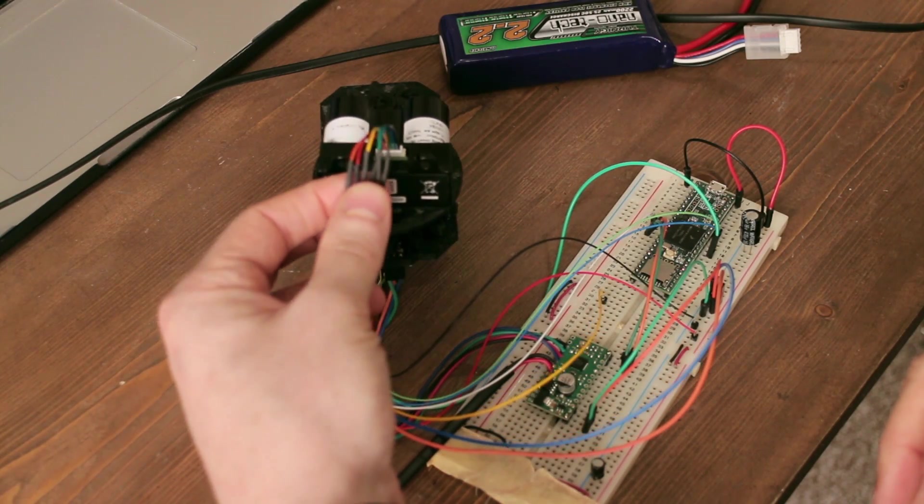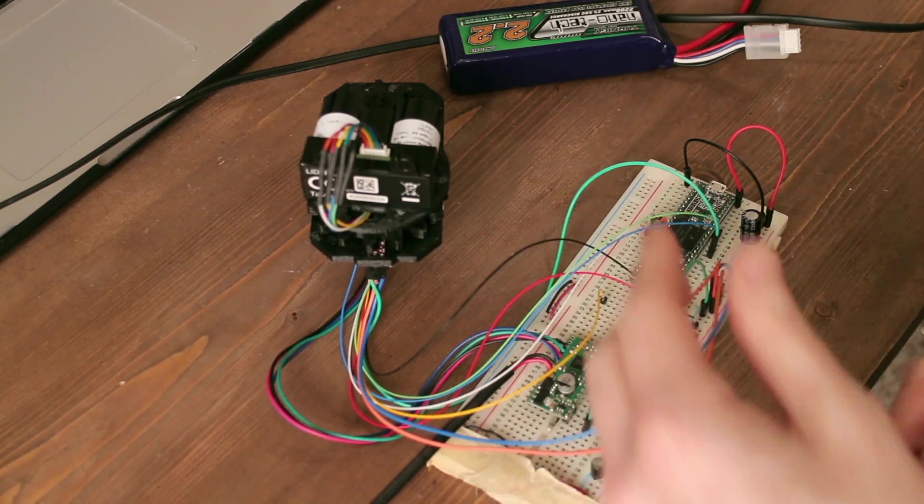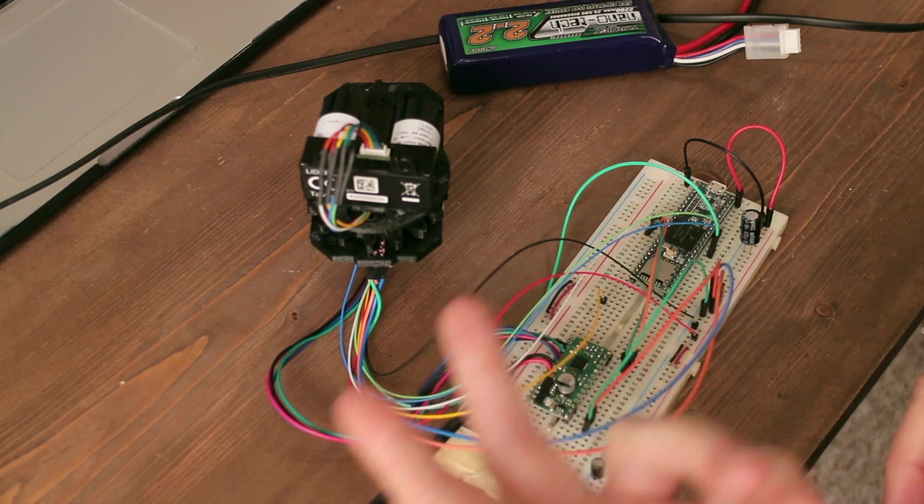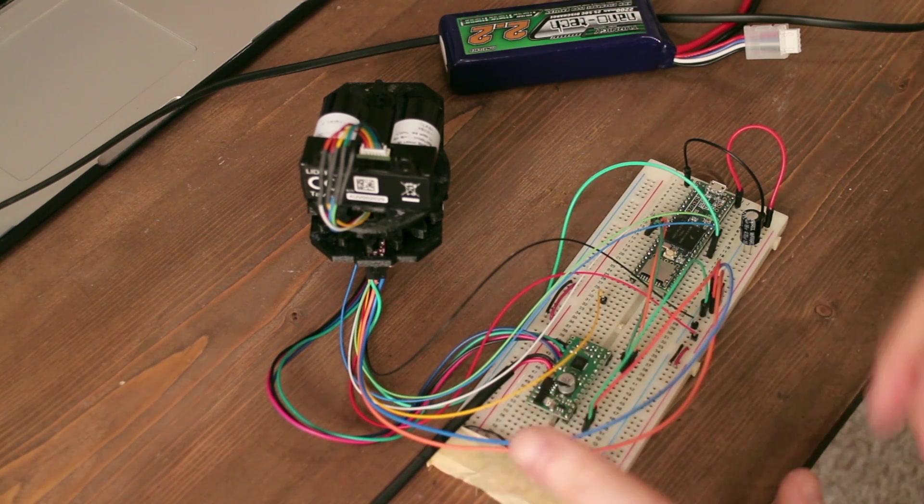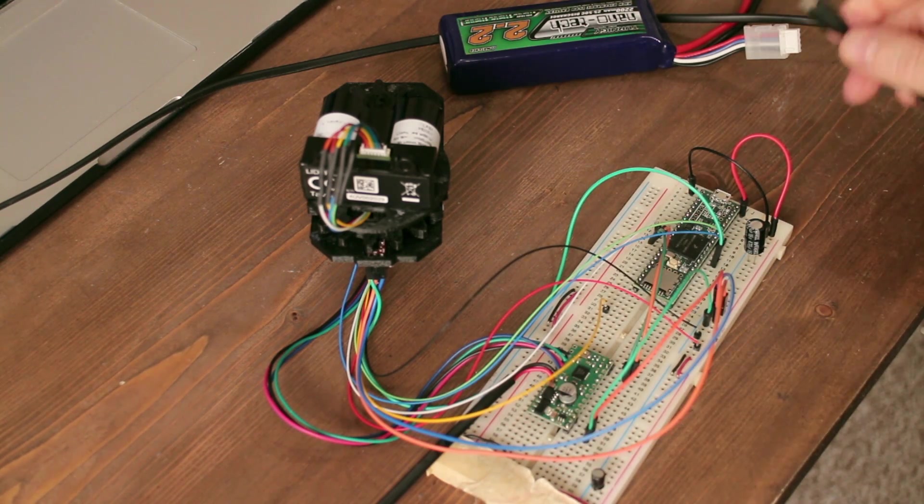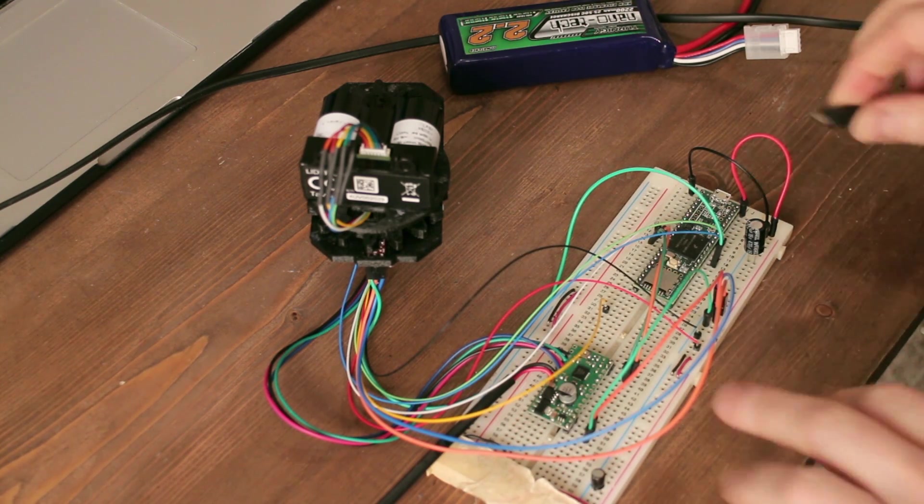The LiDAR sensor then has six connections back to the board: two data, two control type signals, and two power signals. And so that works quite nicely. I'm going to power it up now and you can see how it operates.